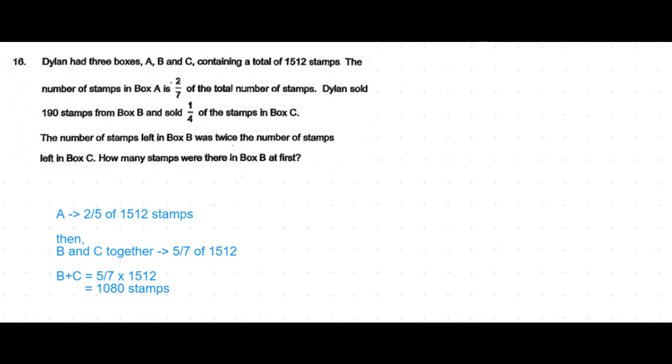This means B + C together is 5/7 × 1512, which is 1080 stamps.